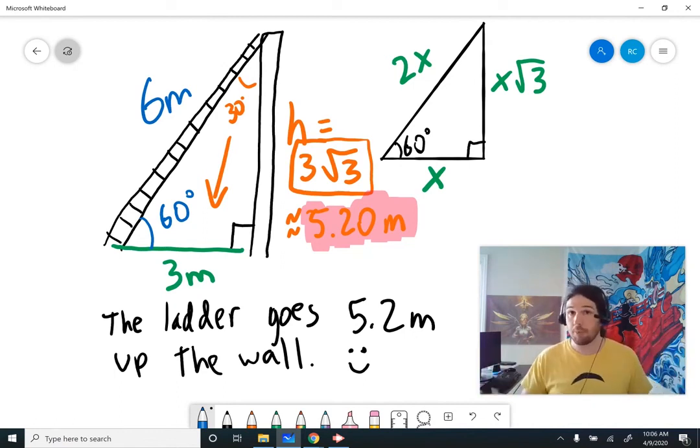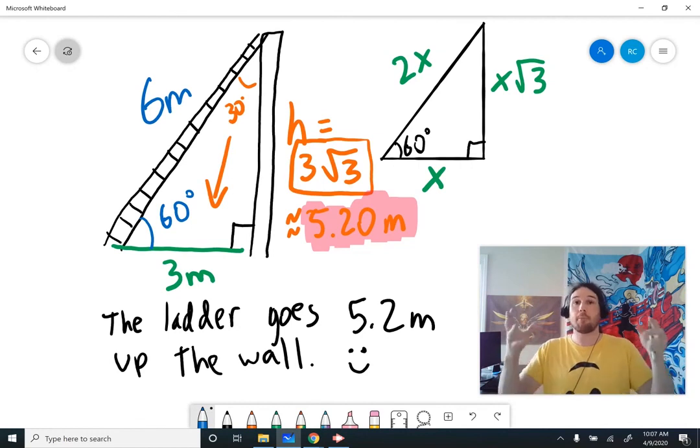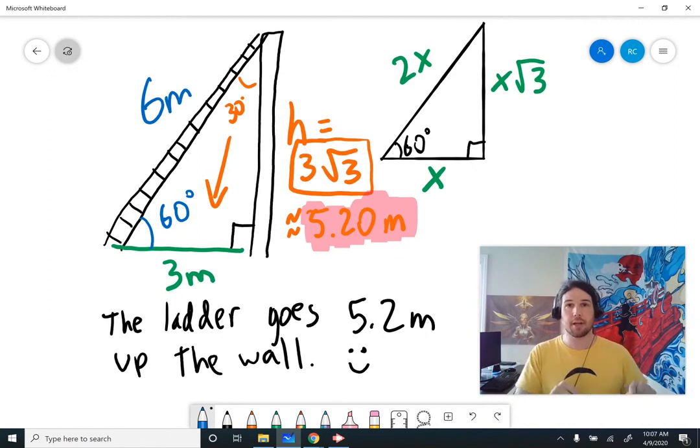I really hope that made sense. Again, you would still get the same 5.2 meters if you use tangent. And I do encourage you to try this problem again using tangent and see if you get the same answer, because I want you to see that these two different methods are both appropriate. They both work.